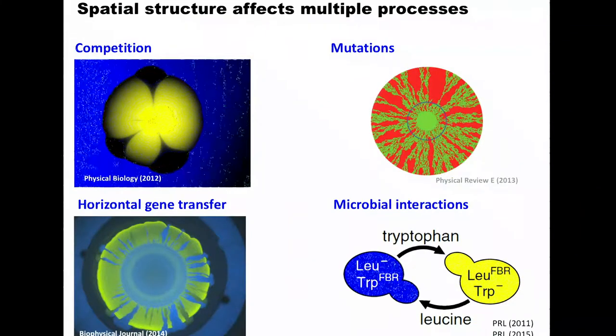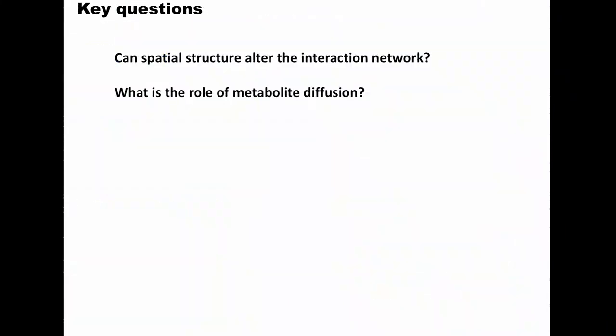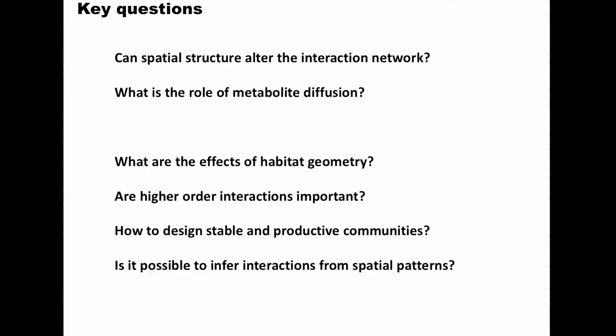The questions I want to answer today are: how spatial structure affects interaction networks, how metabolite diffusion affects things in this colony, how the geometry of the habitat affects interactions, what we can say about higher-order interactions involving more than two species, what design principles we can identify for microbial communities, and whether we can infer interaction patterns purely from the spatial patterns of microbial abundances.